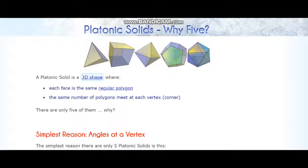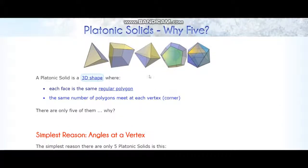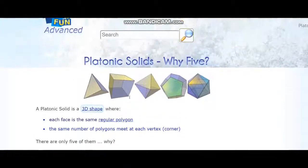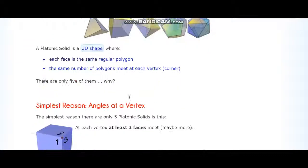So we see that these are all regular shapes and the same number of polygons — one, two, three — meet at each vertex, that is the corner. So these are Platonic solids here, and there are only five of them. My question is: why are there only five?